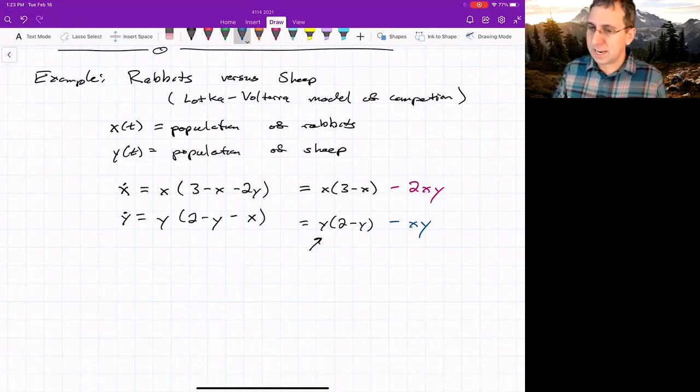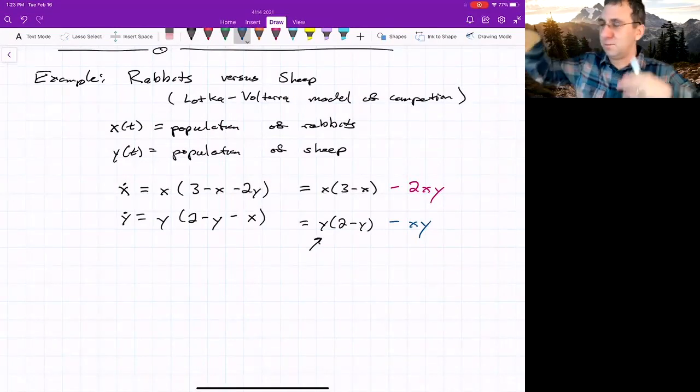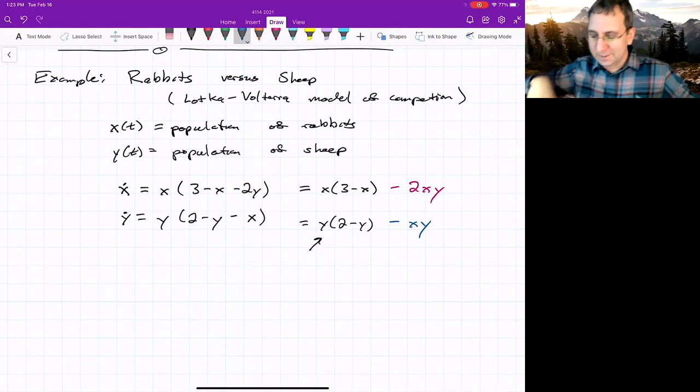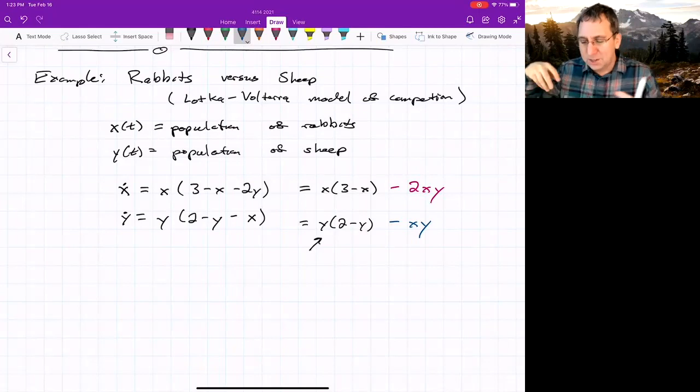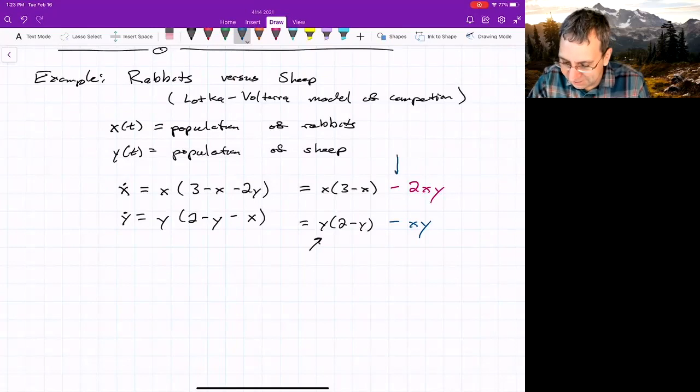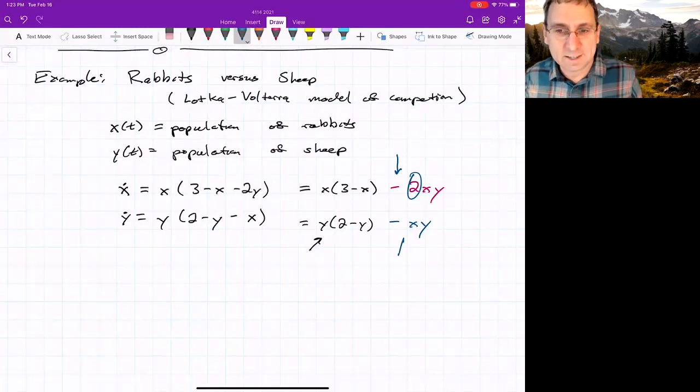How do we explain these two terms? Think of these as interaction terms. When the rabbits and sheep interact, just think of them as randomly moving around in a limited field, maybe 1,000 acres or something. When they do interact, there's going to be this negative sign means that there's going to be an effect on the rabbits. The rabbits will tend to lose that encounter more than the sheep will. That's why there's a factor of 2 here compared to a factor of 1 down there. So think of this as an interaction term.